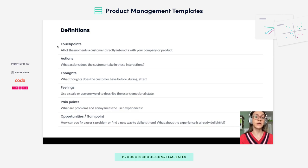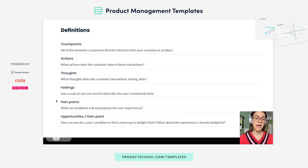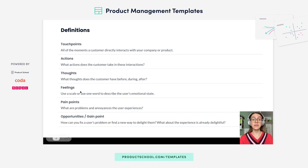At each of these touchpoints, you'll capture what the user actions, thoughts, and feelings are. And then you'll really get to the meat of the Customer Journey Map, which is the pain points and the opportunities. Using all of this information above, you will decide what actions you can take to improve the user experience.